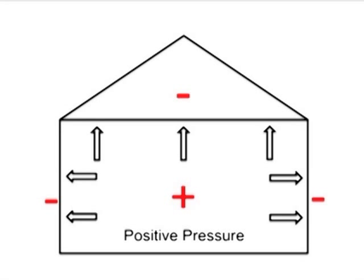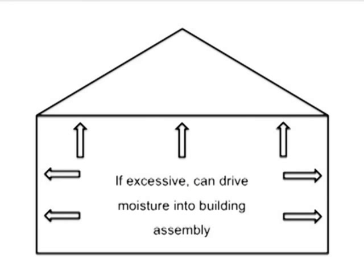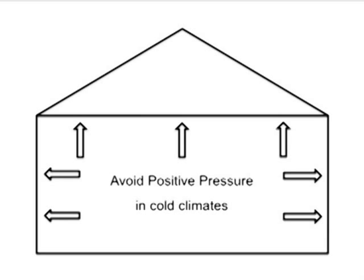Positive pressure in buildings means there is pressure exerted outward on building components. Excessive positive pressure can drive moisture-laden air into building walls, ceilings, and floors, and present durability problems. Positive pressures should be avoided in cold climates.